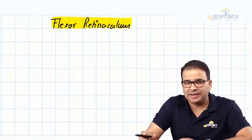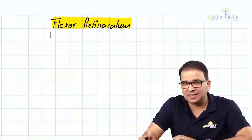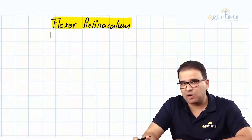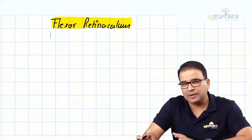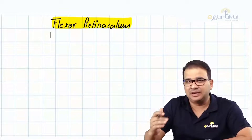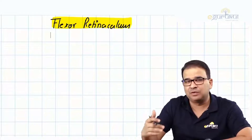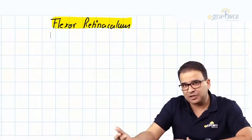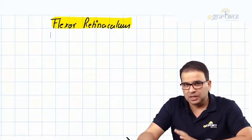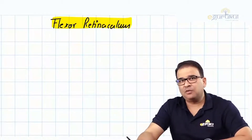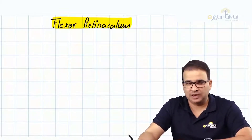Let's talk about the retinacula — the flexor, extensor, and peroneal reticulum — and we'll see how these tendons and blood vessels from the leg are reaching the foot. So, first in the lot, we have the flexor reticulum.